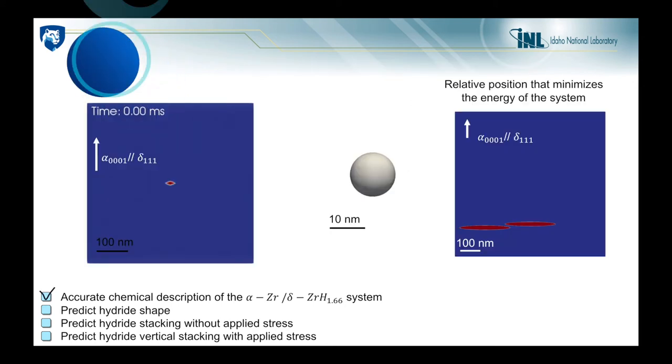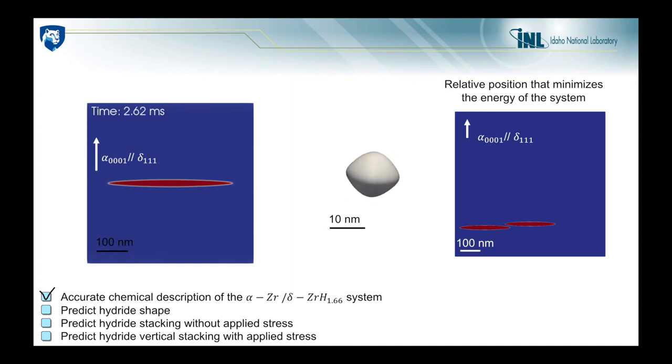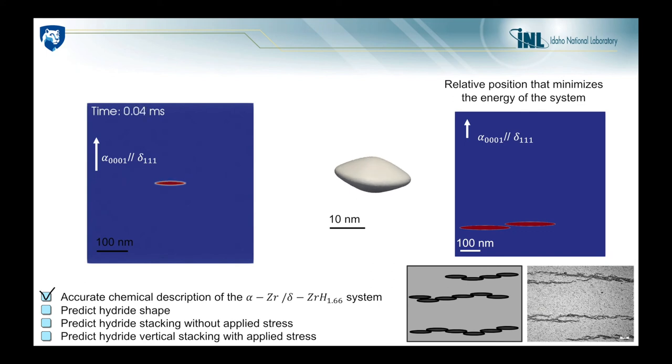Next, we need to check that the mechanics and kinetic properties of the system are accurate enough to predict hydride shape and hydride stacking without applied stress. What we see now on the left is the growth of a hydride in a two-dimensional simulation. We obtain the expected circumferential elongation of the hydride. In the middle, we see the same thing for a simulation in a three-dimensional space. And the image on the right shows the most favorable relative positioning of two hydrides, which allows them to minimize the energy of the system. This stacking corresponds to the microstructure we obtain experimentally without applied stress.